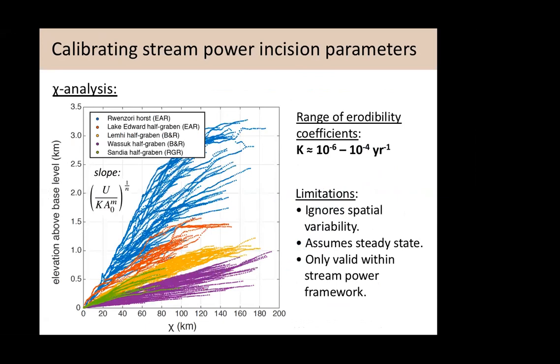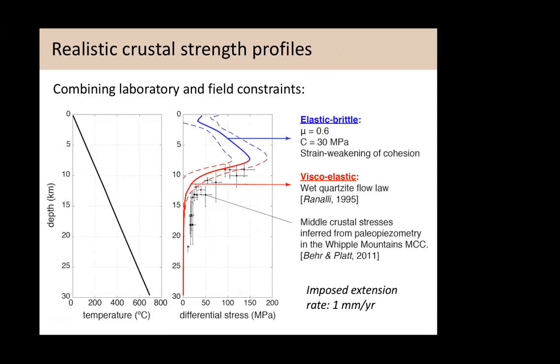We also did this across a number of half-grabens from different rifts — the Rio Grande Rift and East African Rift — to highlight the natural variability in the slope of elevation versus chi, which reports the competition of uplift and erodibility. Through a simple order-of-magnitude exercise, erodibility coefficients typically fall in the range of 10⁻⁶ to 10⁻⁴ per year across these systems. Of course there are limitations: we're only within the stream power framework, we ignore spatial variability in uplift rates, and we assume landscapes are in steady state. But it's a good place to start, and this is how we calibrate the landscape part of the coupled model to something reasonable and documented in nature.